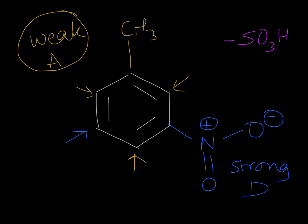So now the weak activator has three different possible positions for directing the SO3H group. Out of that, this position is somewhat sterically hindered by two groups on either side. But either of the other two positions are not very hindered. In fact, they're quite similar. So the SO3H group could end up here or here.